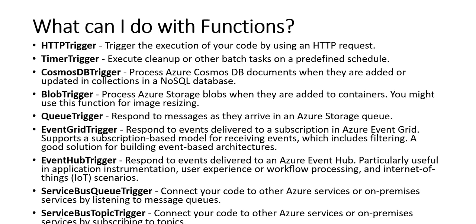The blob trigger can process Azure Storage blobs when they are added to containers — you might use this for image resizing, like cropping an image or changing its pixel dimensions. The Event Hub trigger responds to events delivered to an Azure Event Hub, which is particularly useful for application instrumentation, user experience workflows, and IoT scenarios.